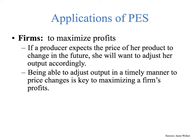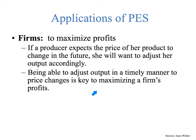Now let's look at why we care. There are two main reasons why price elasticity of supply is important: first, it's important to firms; second, it's important to the government. For firms, they're trying to maximize profits. If a producer expects the price of her product to change in the future, she'll want to adjust her output accordingly — to be more elastic to that price change. If the price is going down, she'll want to reduce output so she doesn't end up with too much in the marketplace. Being able to adjust output in a timely manner to price changes is key to maximizing a firm's profit.